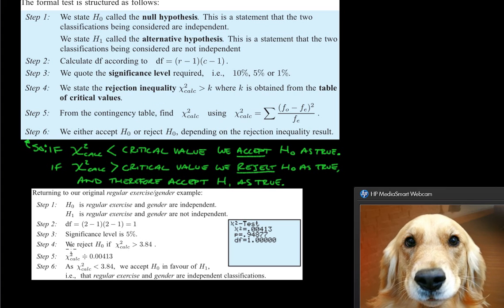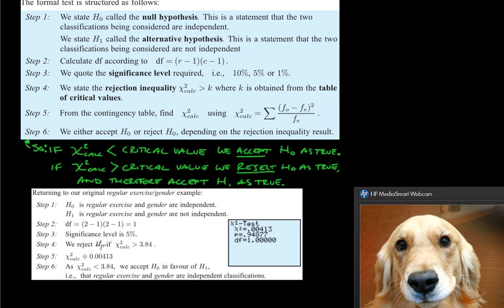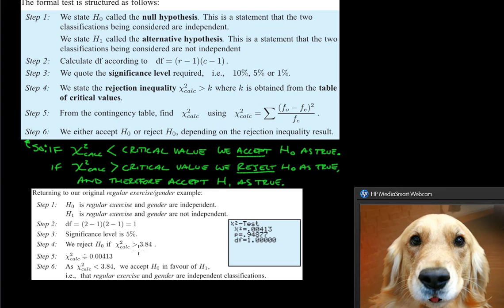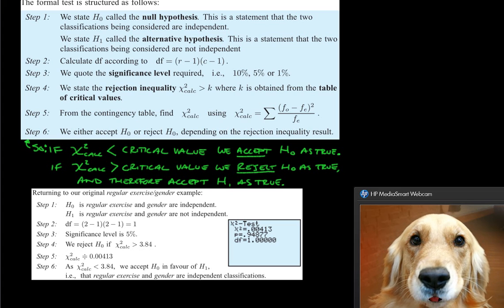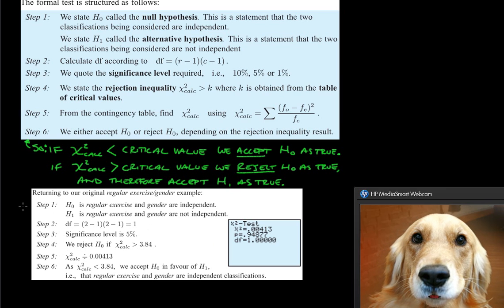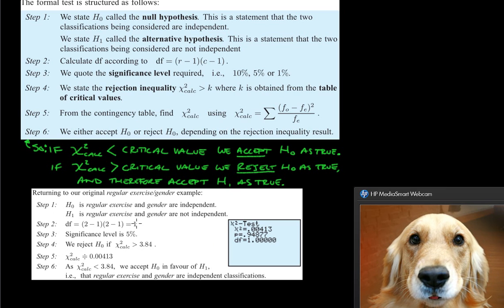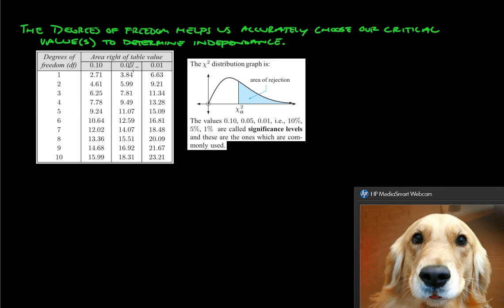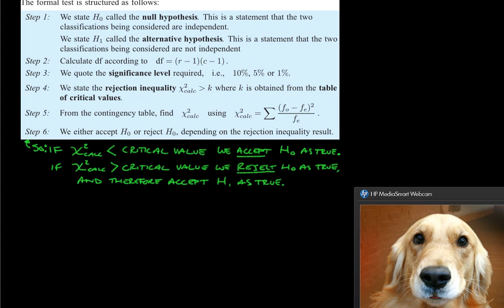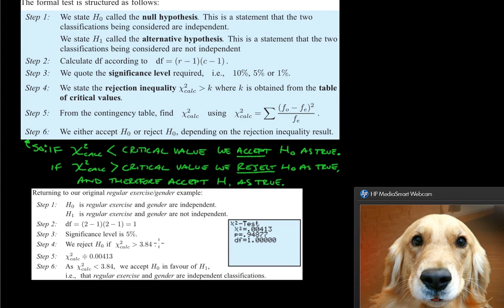So now our step four is we reject our null hypothesis if our chi-squared calculation is greater than 3.84. And right now you're probably wondering where in the world 3.84 comes from. So remember this: our degrees of freedom is one and our significance level is five. Degrees of freedom is one, the significance level is 0.05. There's our 3.84. So that's the number that we're looking for. So that's where that 3.84 comes in.